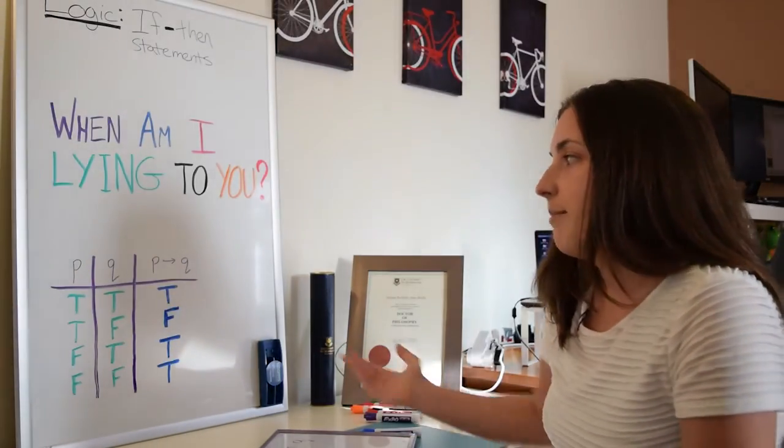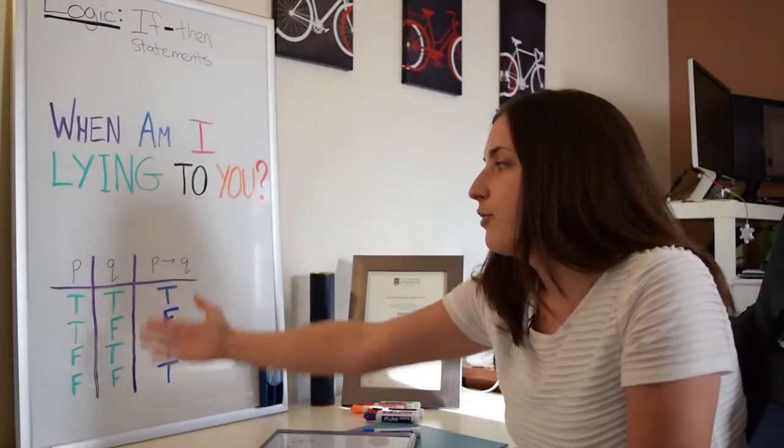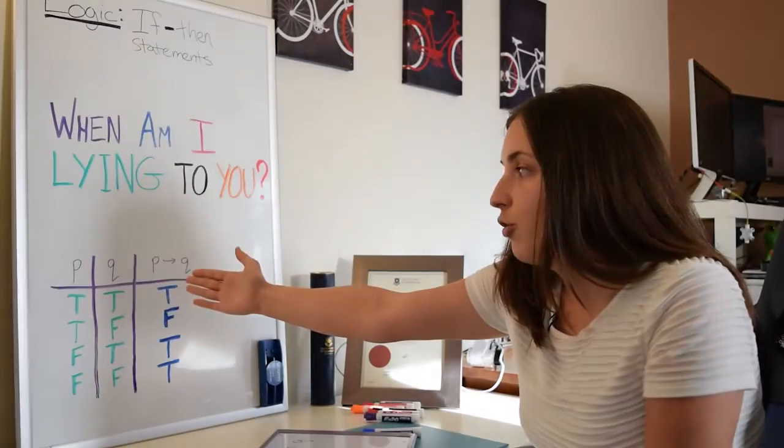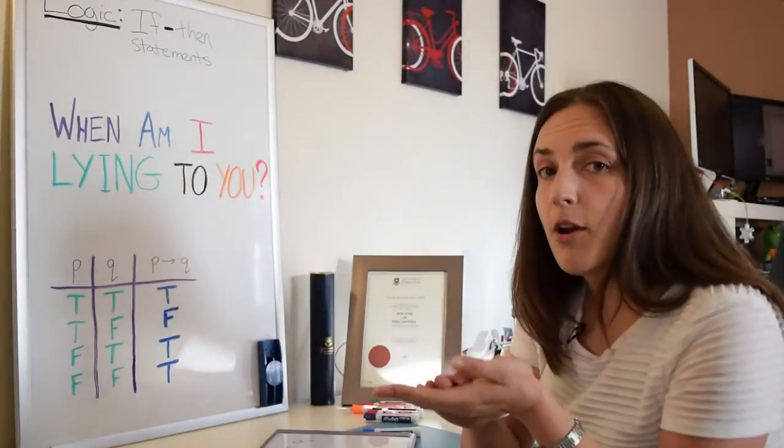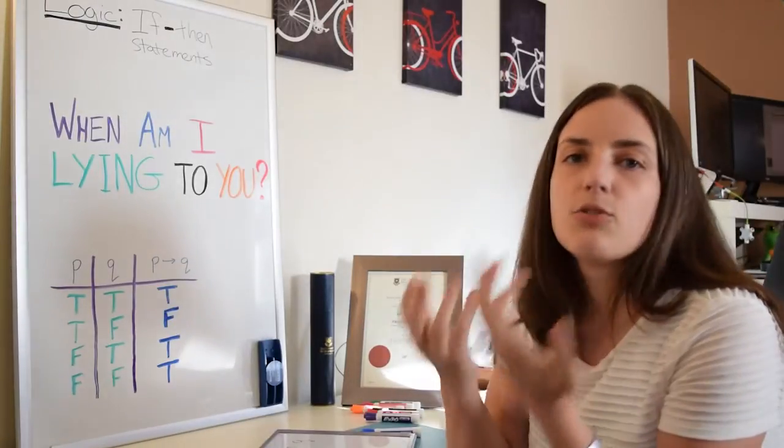If you have an if-then statement, which I've represented on the board here, we really have two things to keep in mind. The P portion, and the Q portion. And you can think about it for a moment. There are four options for what could happen. Let's use the car example.